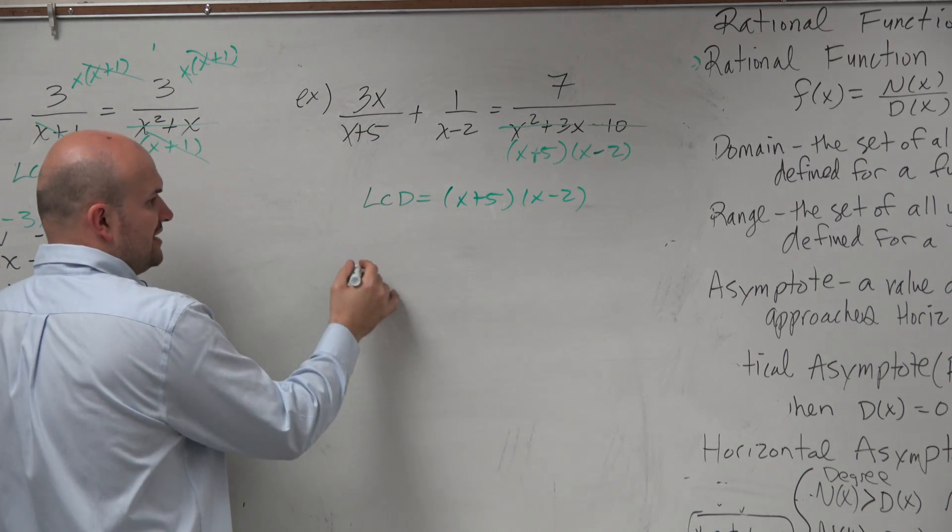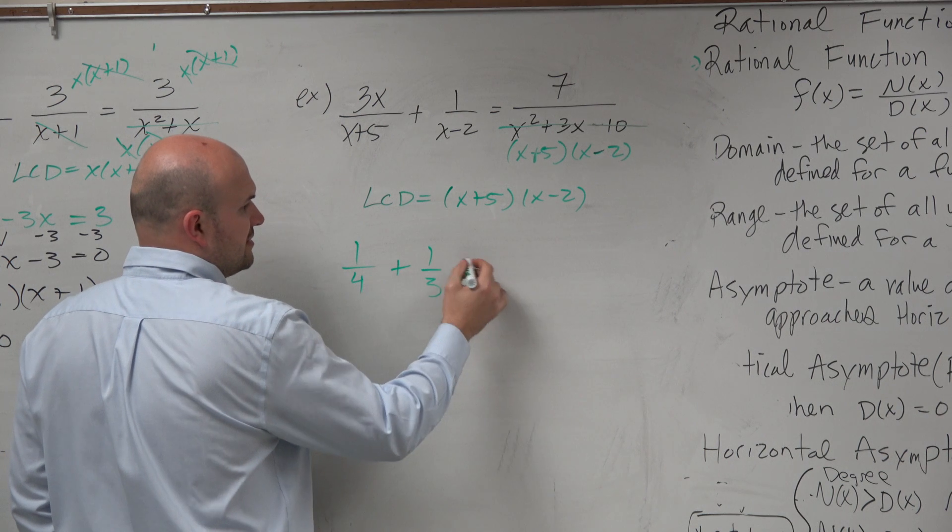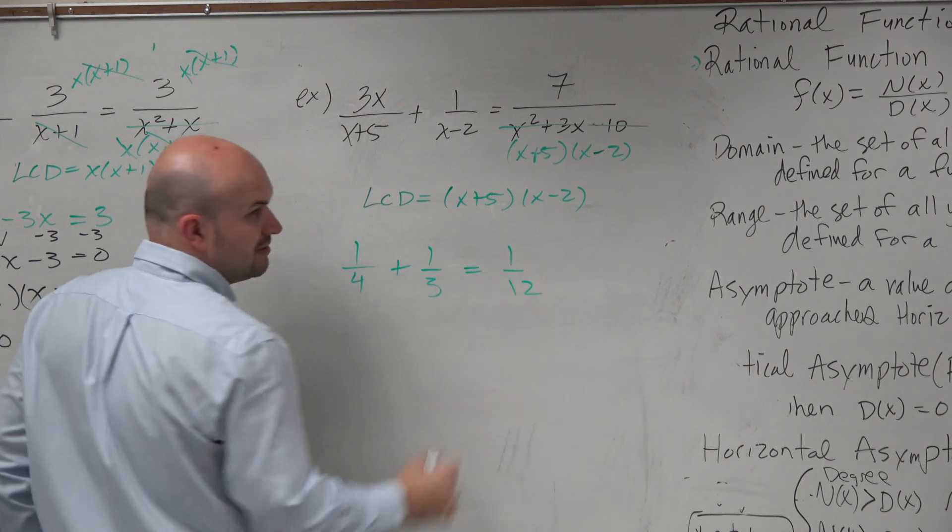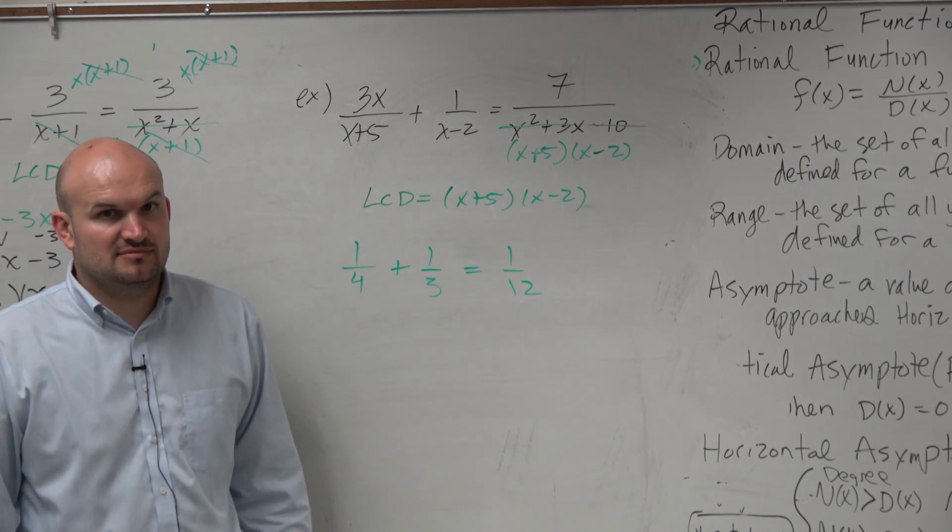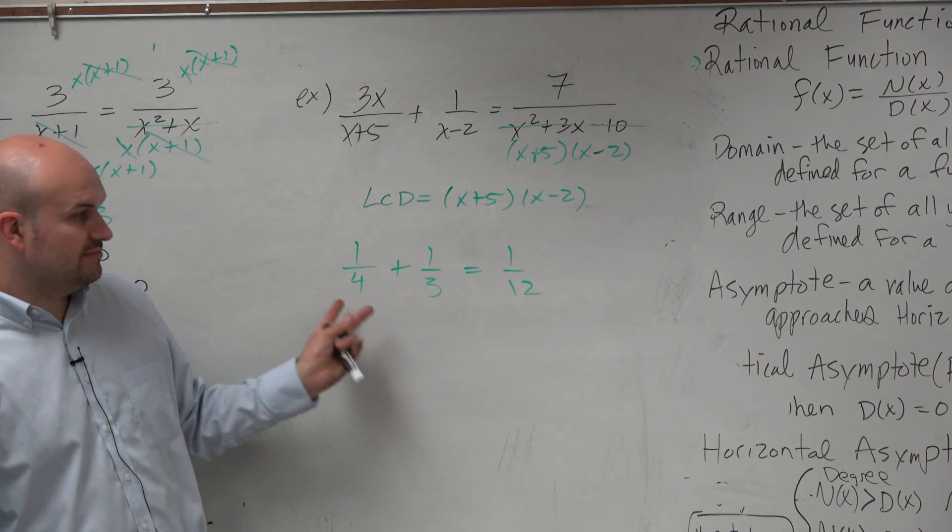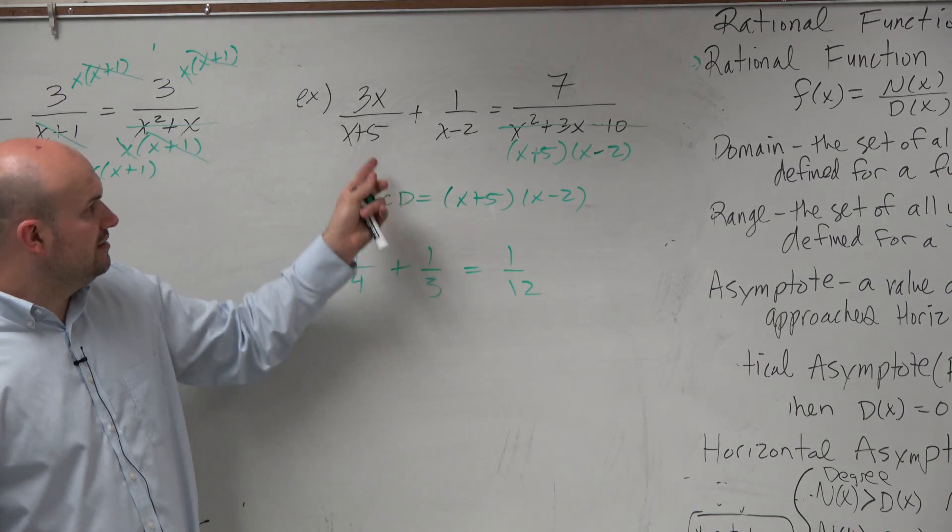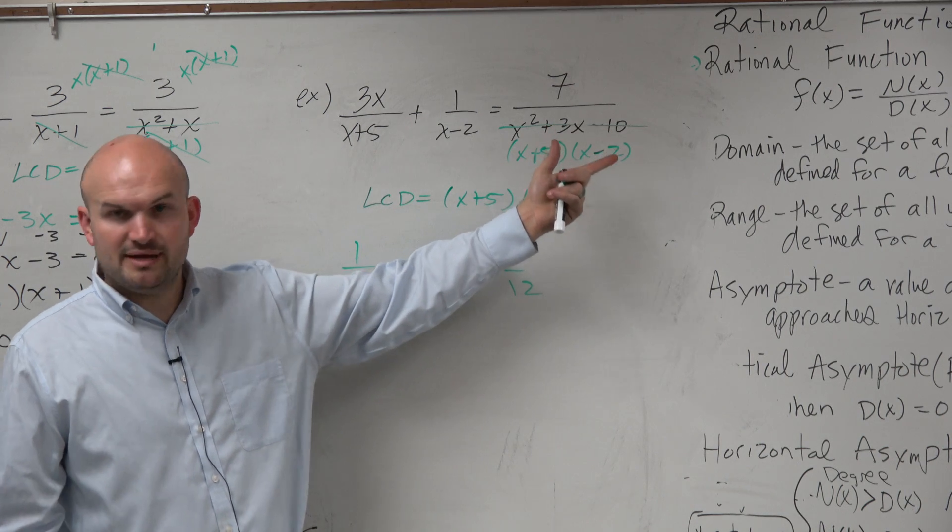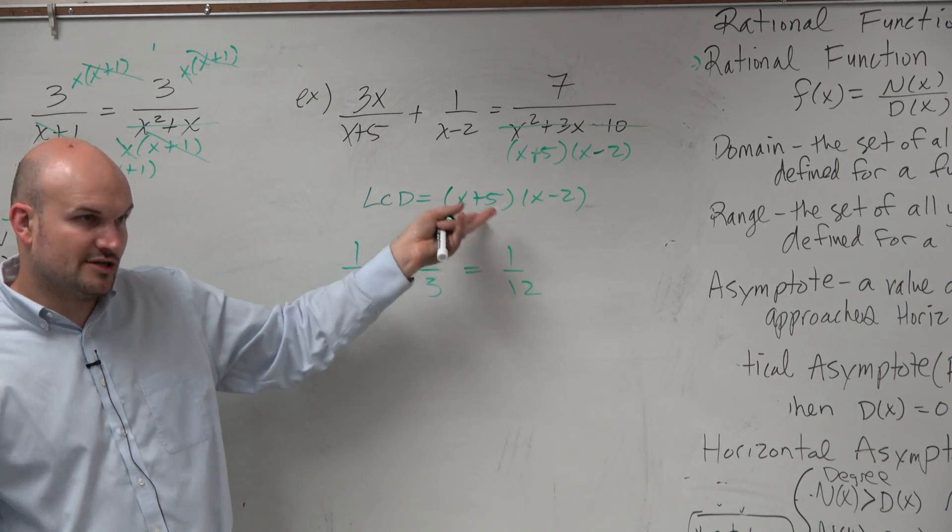It's kind of like looking at this: x plus 4 plus x plus 3 equals 1 over 12. What's the LCD there? It's 12. It's 4, 3, product is 12. Their product is right there. So you just use that product as your LCD.